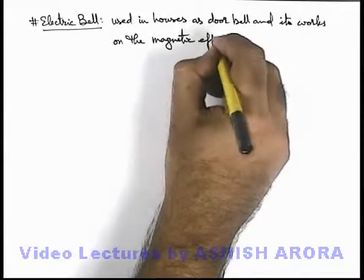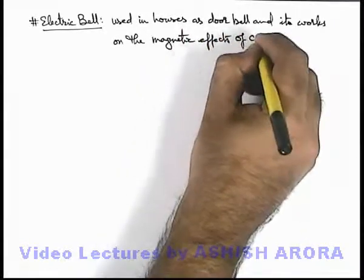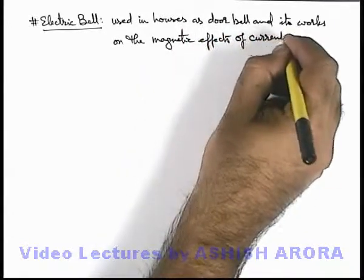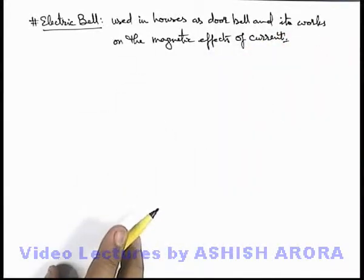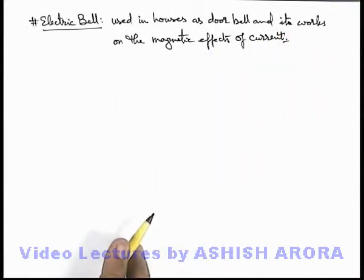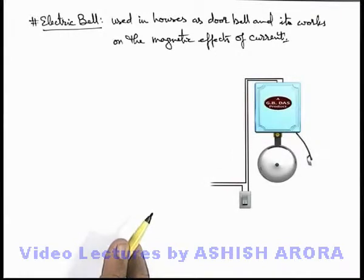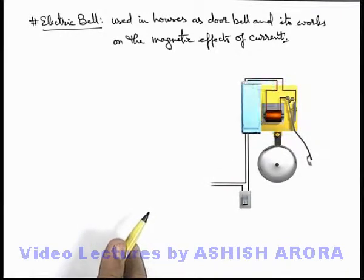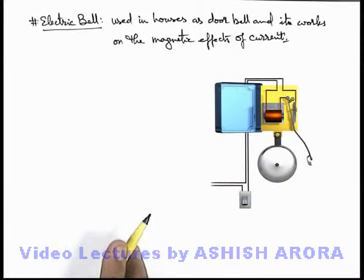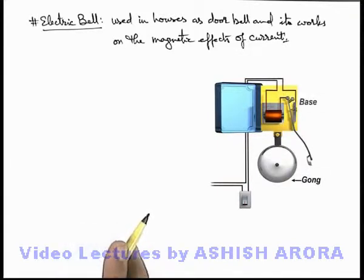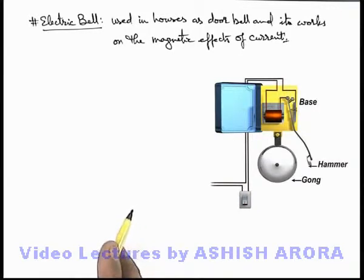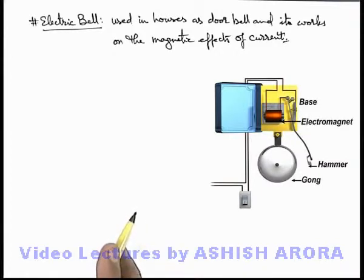How it works — here we can see a picture of a typical electric bell, in which you can see there are different components. There is a gong connected to the base of this electric bell, and adjoining to the gong there is a hammer, and aside of the hammer there is an electromagnet. The whole system is clamped to the base.